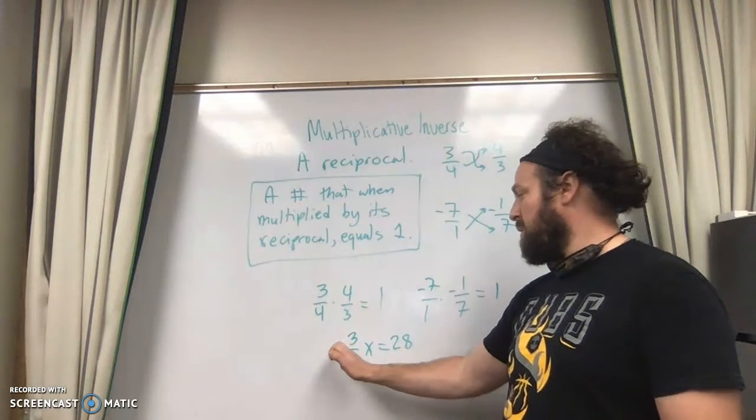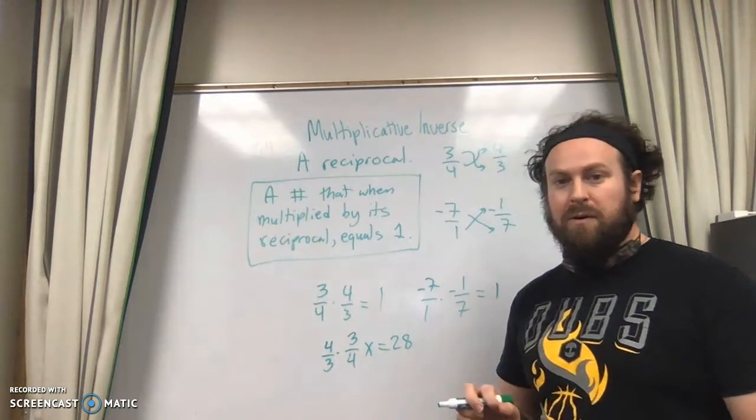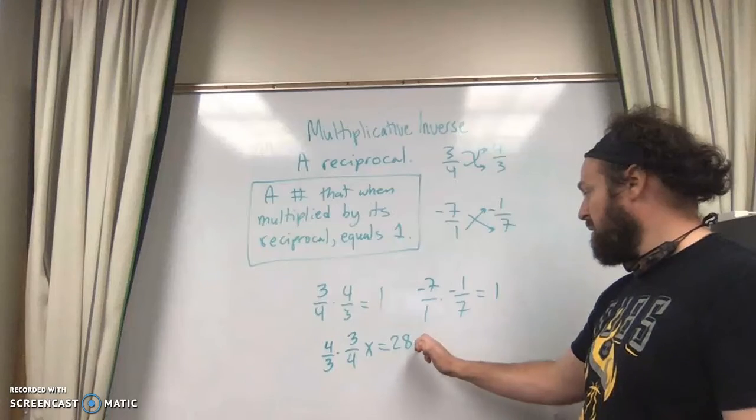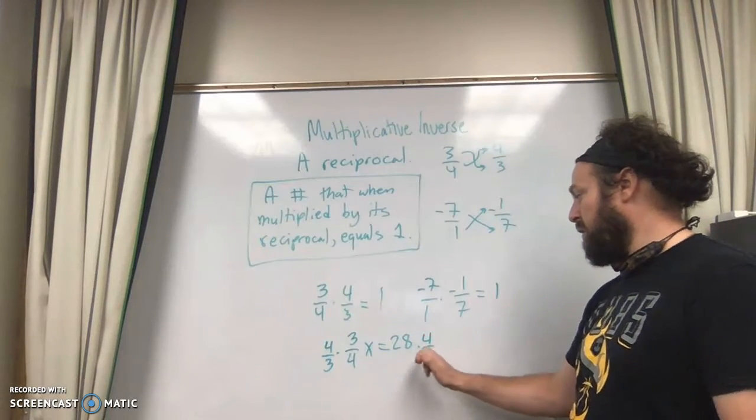And the way I get that to be 1x is I multiply it by the reciprocal, by the multiplicative inverse, times 4 over 3.